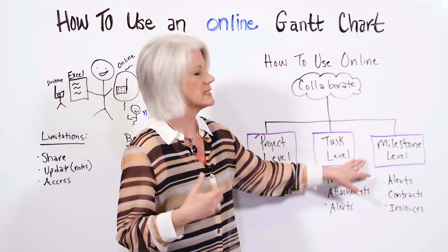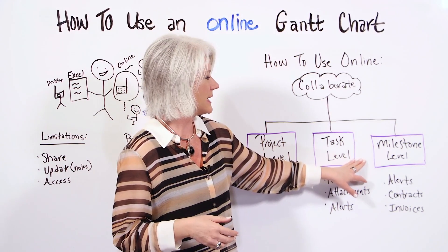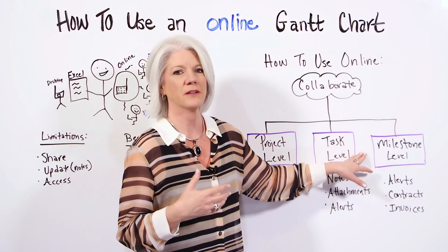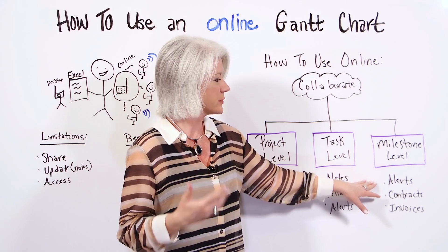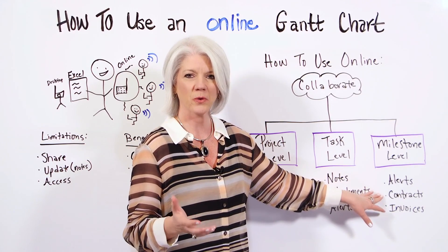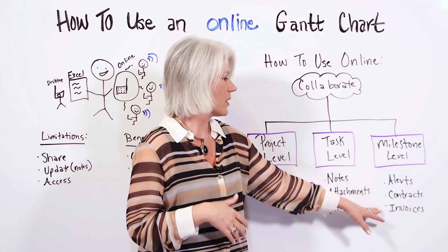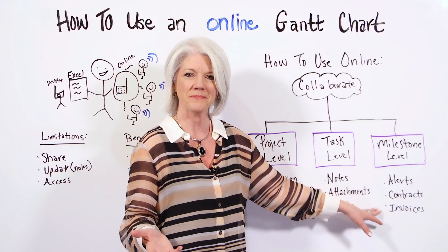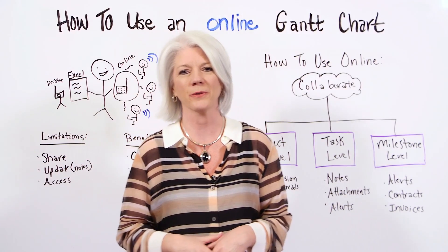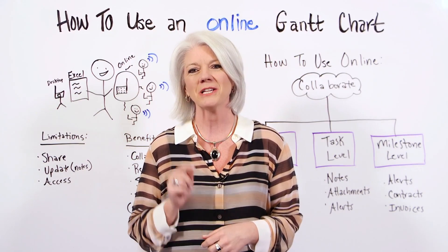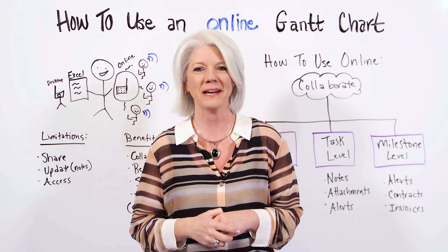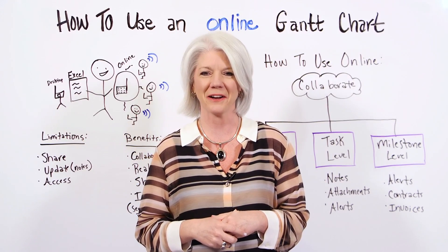The third level is the milestone level. You can set up alerts for when a milestone has been met or completed. You can trigger an alert to indicate when to send a contract, close out a contract, send an invoice, or even process a payment. You can see how the online Gantt chart can be very powerful to help you manage your project. If you need a tool, sign up for our software now at projectmanager.com.